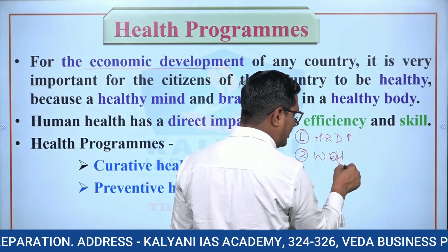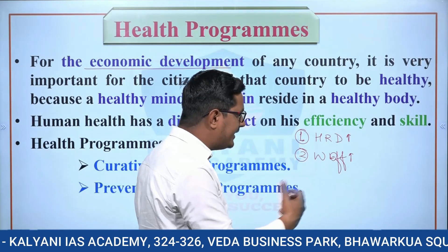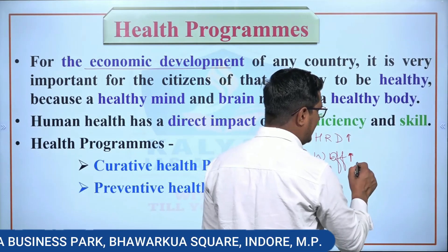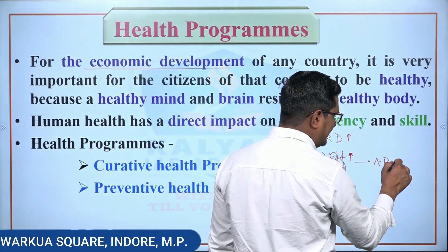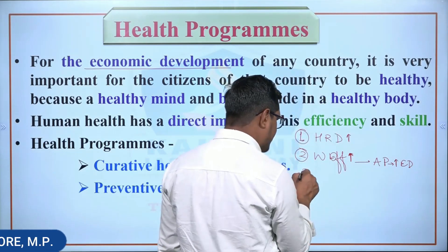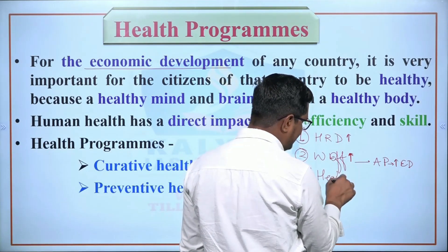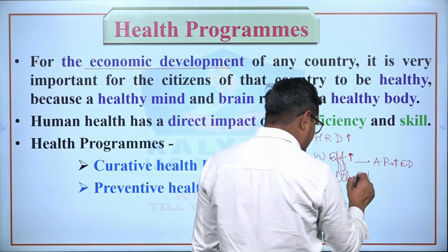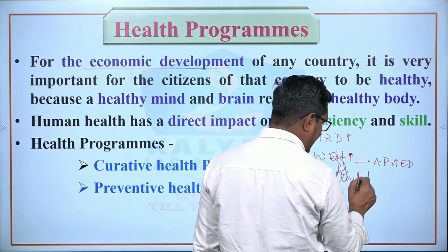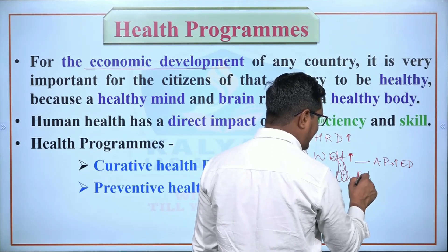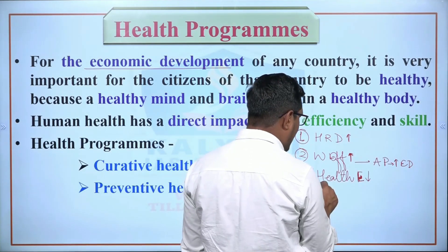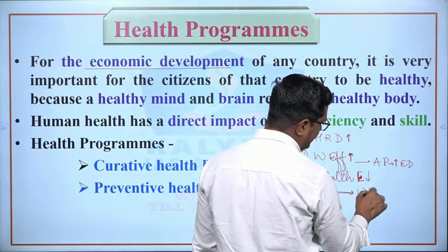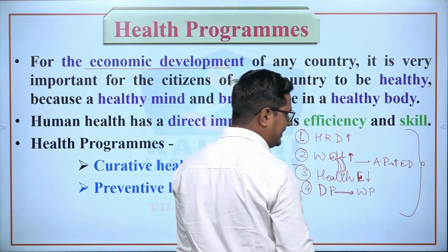Work efficiency improves because an unhealthy person can work on average 6 to 7 hours, whereas a healthy person can work more than 8 or 9 hours, increasing productivity. Also, health expenditure decreases when better health facilities are available at minimum cost. The dependent population due to health reasons converts into the working population.